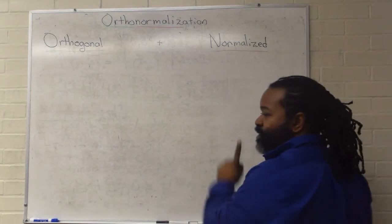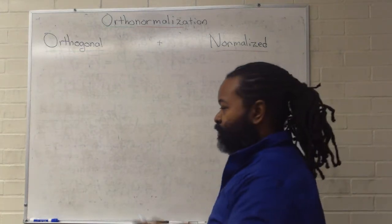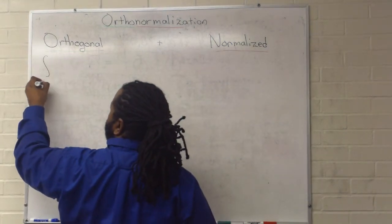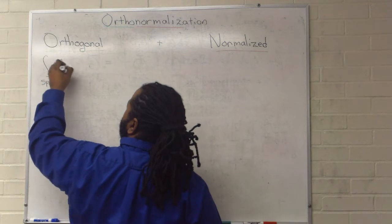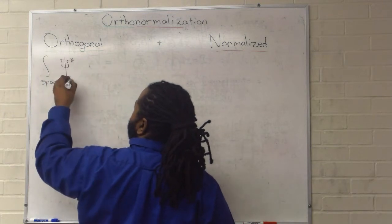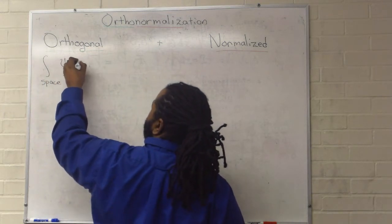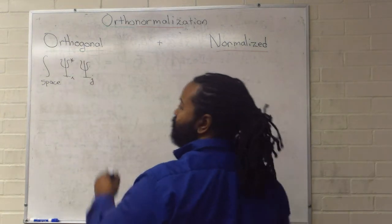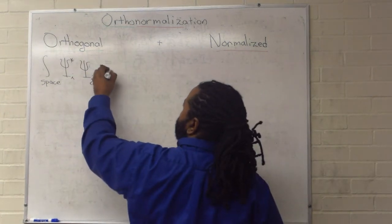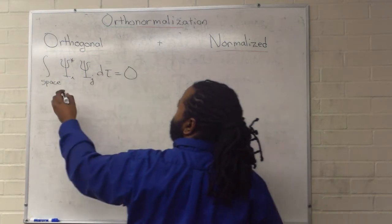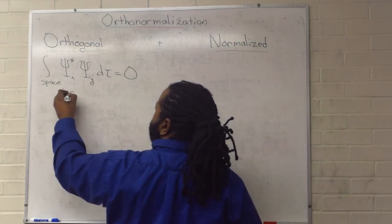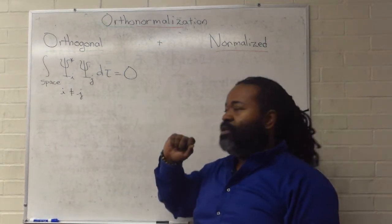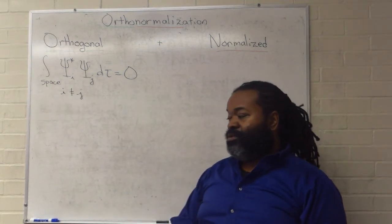In the case of orthogonality, the idea is we can set up an integral over space. And the index on the two parts will be different. So, if i and j are not equal, then this integral will need to be zero.